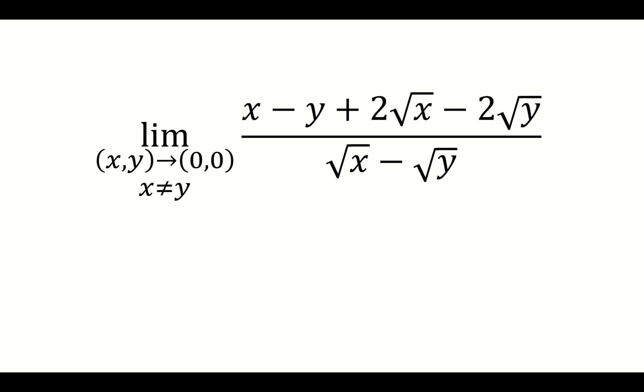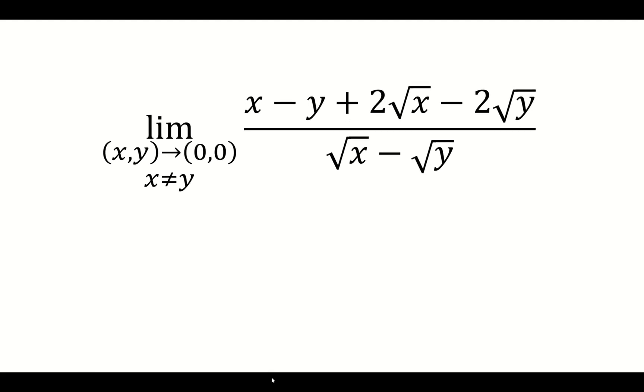I want to find the limit as x and y approach (0,0) of x minus y plus 2 root x minus 2 root y over the square root of x minus square root of y.